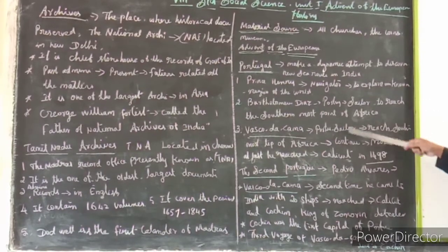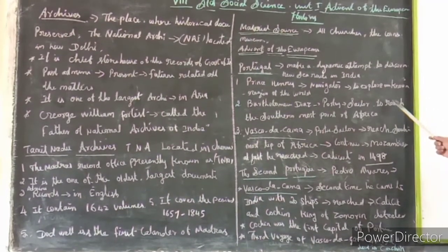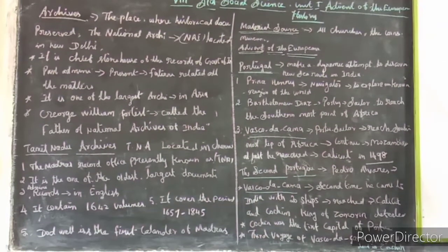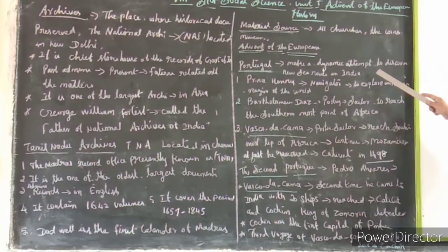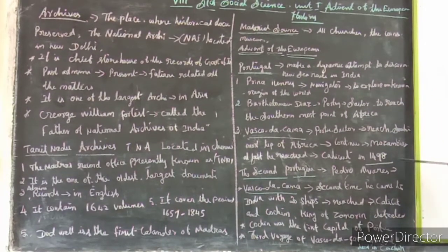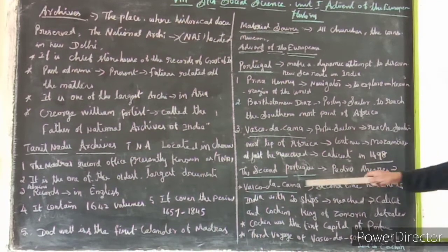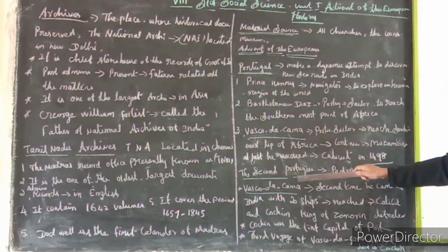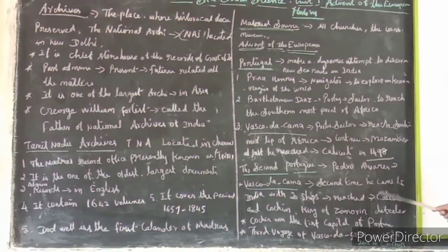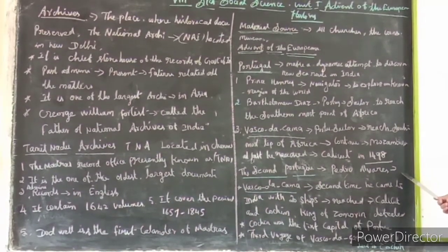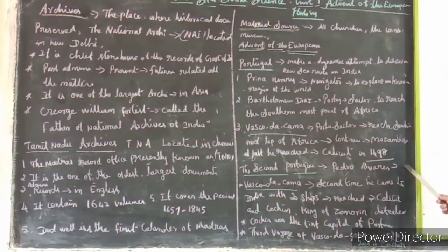Why did they seek a new sea road? Because all the land routes were closed by the Arabians, Turks, and others. So they wanted to trade with India and came to discover the new sea road. The second Portuguese person, Pedro Alvarez Cabral, came to our country with six hundred soldiers and found out the new sea road.